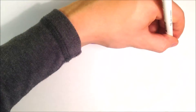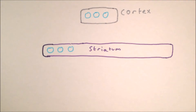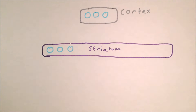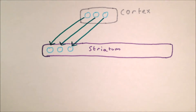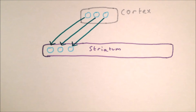Each loop has a value known as its salience — this is effectively its relevance to the current situation. Appropriate behaviors will have high salience values, and inappropriate ones will have lower salience values. It is thought that the level of activation of each competing loop reflects its salience. The competing loops all project an input to the striatum.